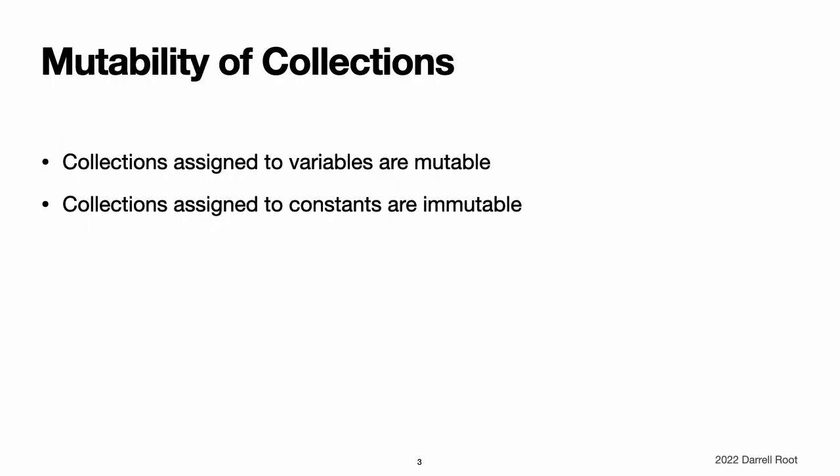Mutability of Collections. If you create an array, a set, or a dictionary and assign it to a variable, the collection that is created will be mutable. This means that you can change or mutate the collection after it is created by adding, removing, or changing items in the collection. If you assign an array, a set, or a dictionary to a constant, that collection is immutable, and its size and contents cannot be changed.